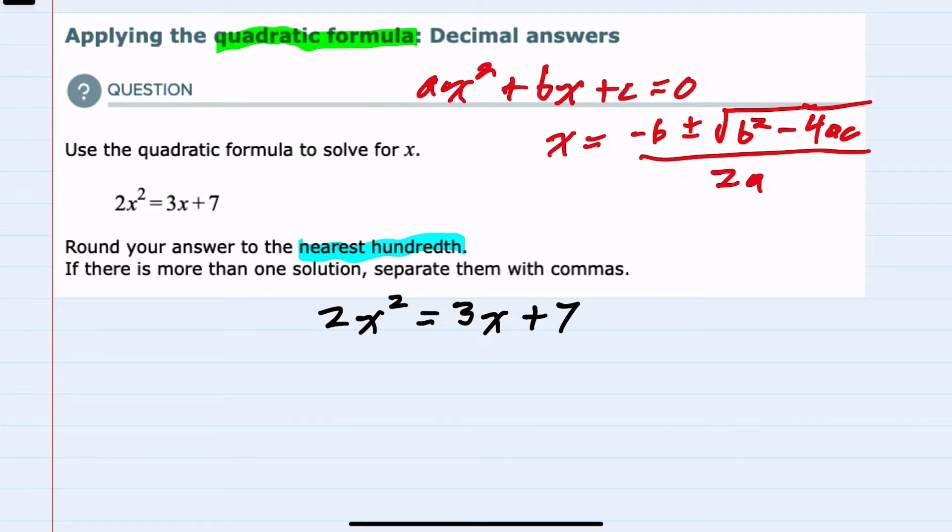However, we can write this equation in the correct form by setting it equal to zero. I can do so by subtracting 3x over to the left-hand side and subtracting the 7 over to the left-hand side.